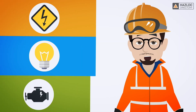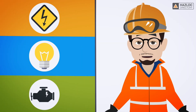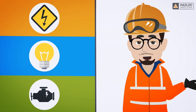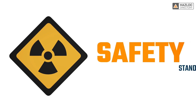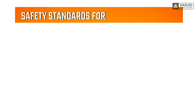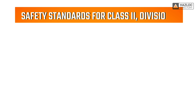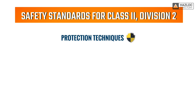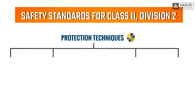Electrical devices used in these Class 2 locations must therefore be designed, constructed, and certified in compliance with relevant safety standards in order to be safe to use in such hazardous locations. As indicated in the standards, in order to be certified as compliant with Class 2 Division 2, electrical products must be protected by one or more of the following protection techniques.